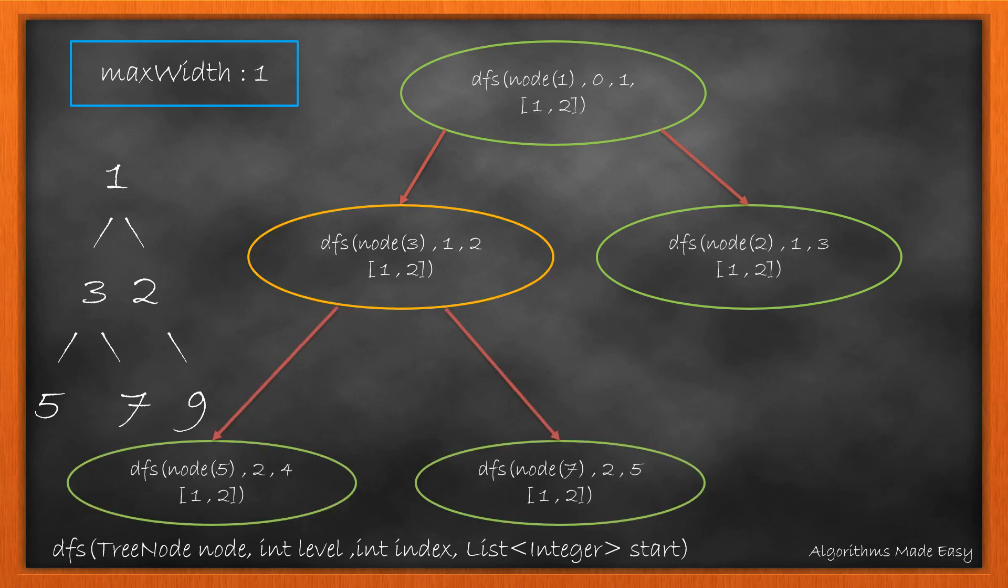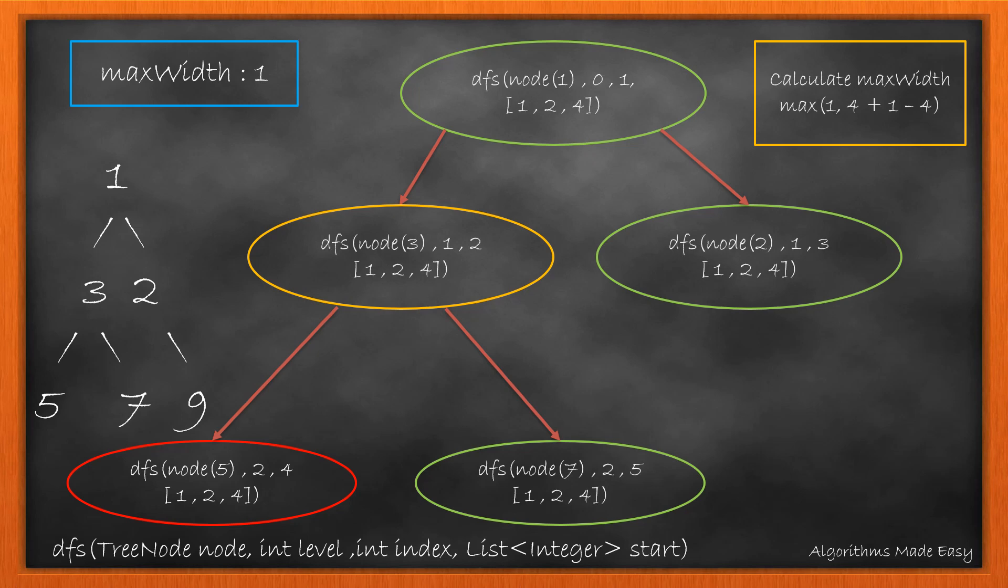Now, we apply DFS on left and right child for the current node. Again, as the level and list size are same, we add the index in the list and calculate the max width. As we have completed the operations on left, we perform the calculations on the right node. This time, the level is not equal to the list size. So we just calculate the max width. And this time, the width gets updated as it takes into account node 5 and 7.